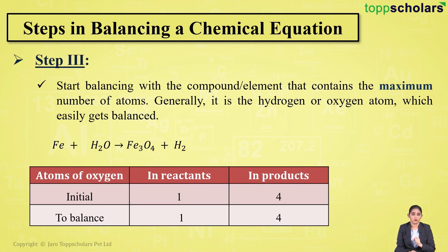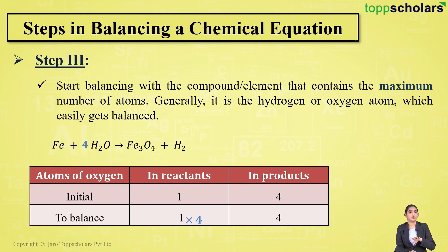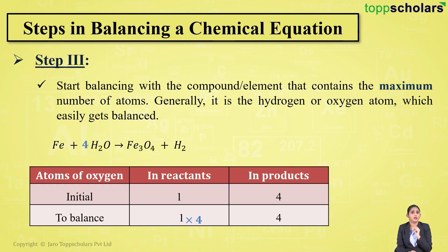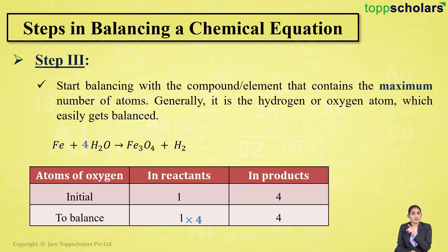On the reactant side there is one oxygen atom, whereas on the product side there are four oxygen atoms. To balance oxygen, multiply the oxygen on the reactant side by four — put four as the coefficient. This gives four oxygen atoms on the reactant side. Remember, when you add a coefficient, it affects all atoms in that molecule.